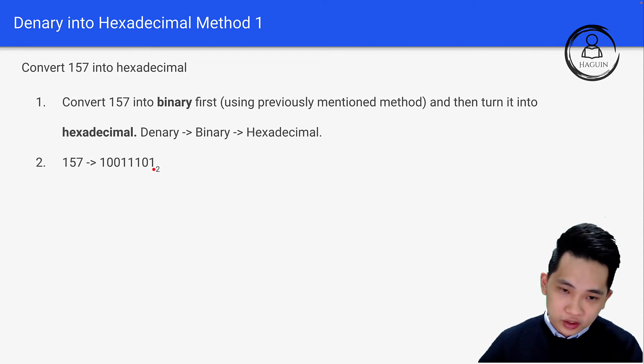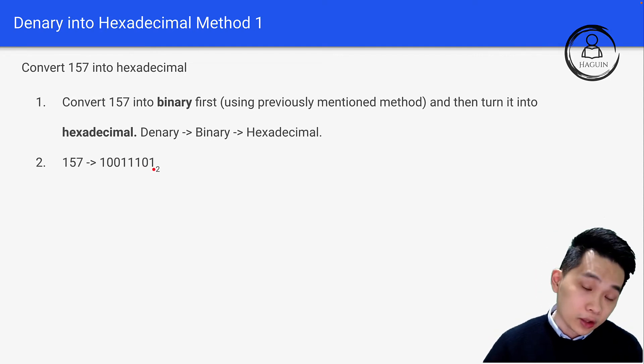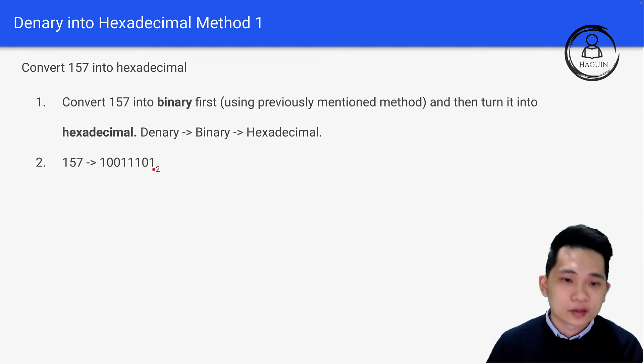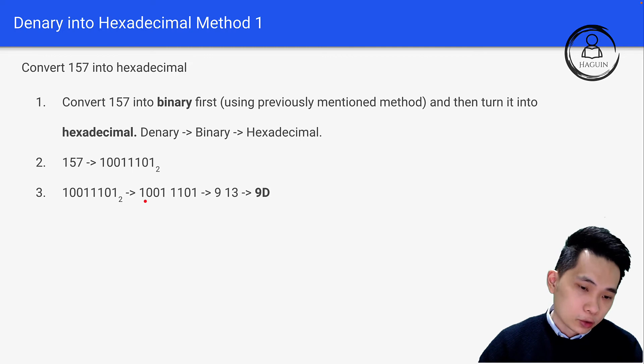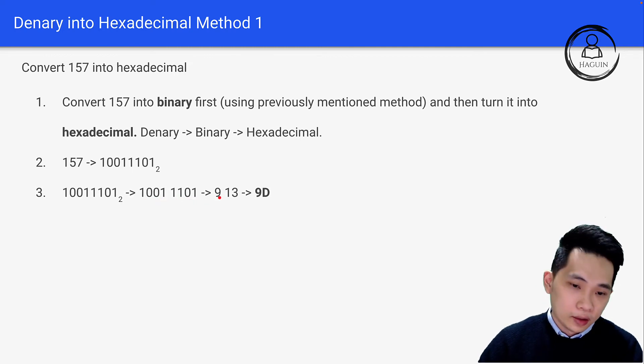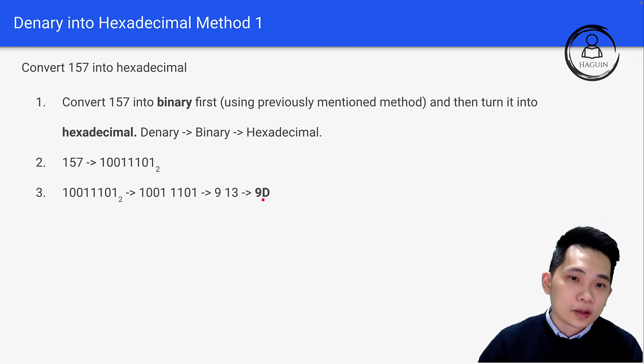Then apply the same 4-bit chunk trick. Split 10011101 into two chunks of 4: 1001 and 1101. These equal 9 and 13 respectively, giving hexadecimal 9D.